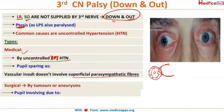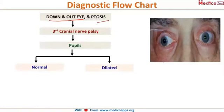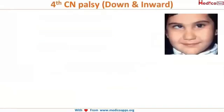An important flowchart for third cranial nerve palsy: if the pupil is spared, check for diabetes or hypertension and correct them. However, if the pupil is dilated, immediately order imaging and proceed with further management.